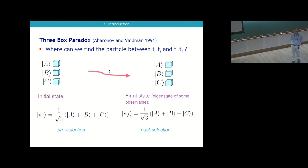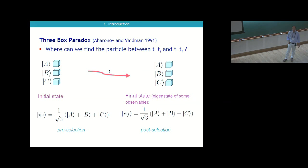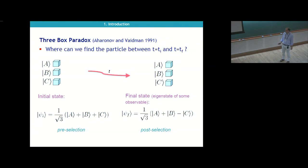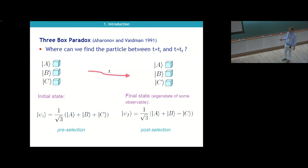The question is: where can we find the particle between TI and TF? I prepare the system at initial time in some state — let's choose a particular superposition — and at the end I make a projective measurement of some observable. I only keep the states corresponding to one particular eigenvector, which is called post-selection. The preparation is sometimes called pre-selection.